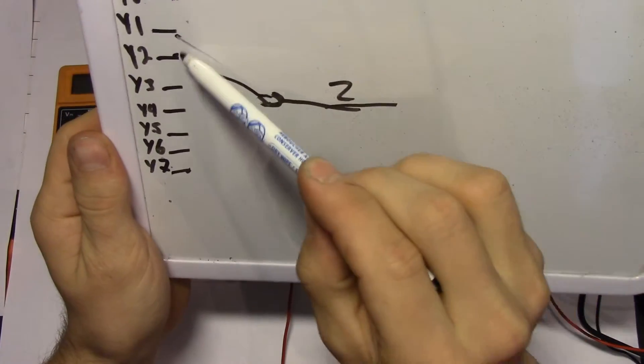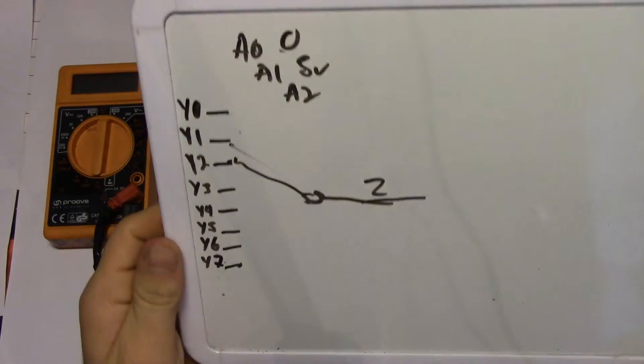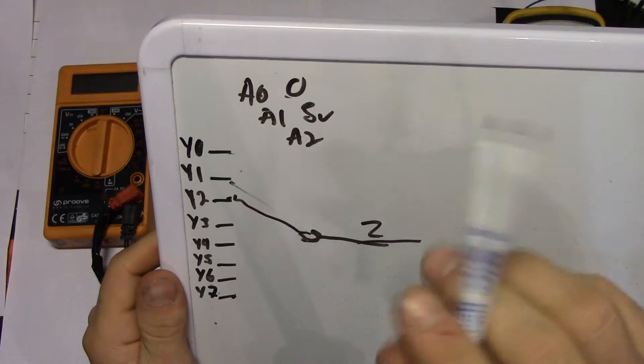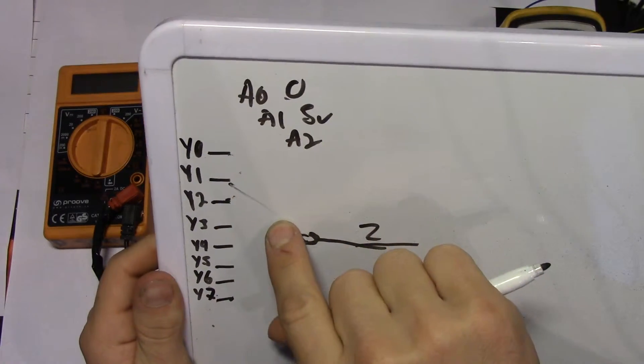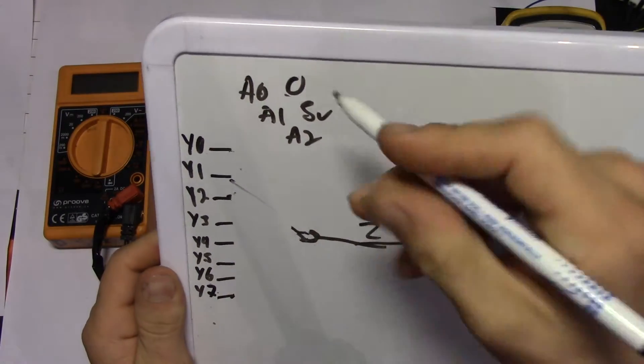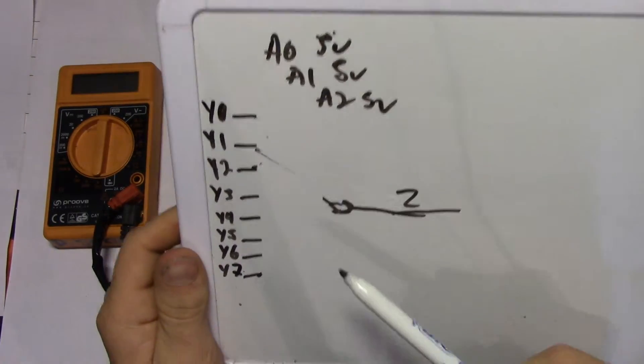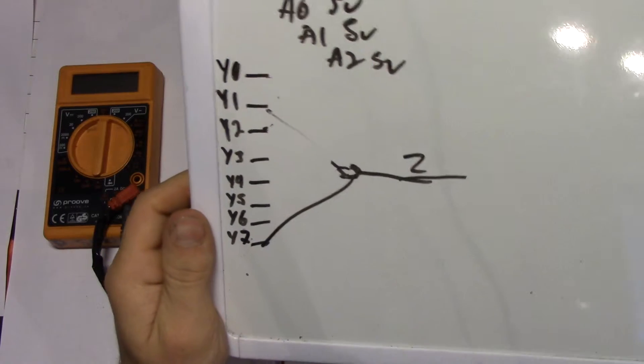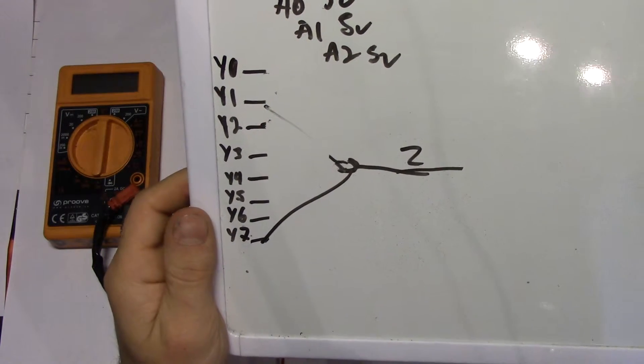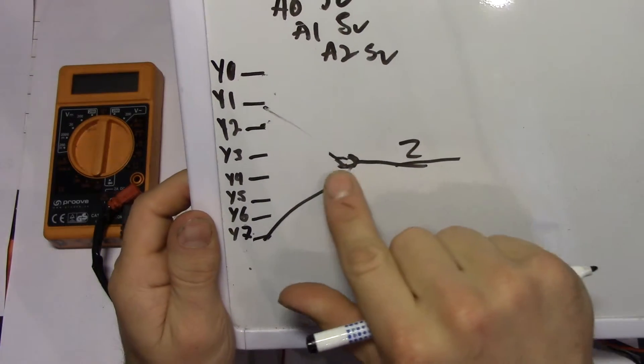It's that simple. If all of them are high, for example, we will have a connection to Y7. So easy peasy.